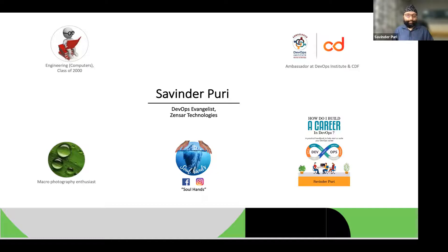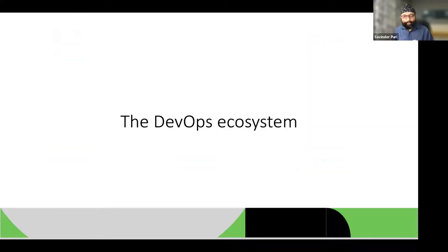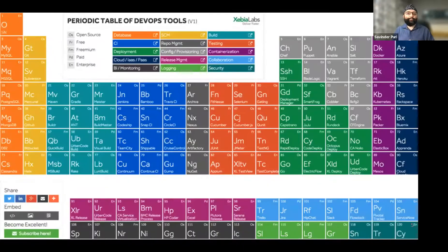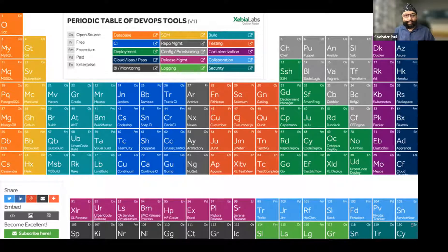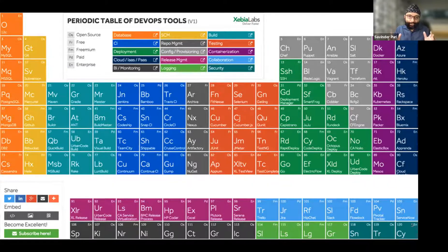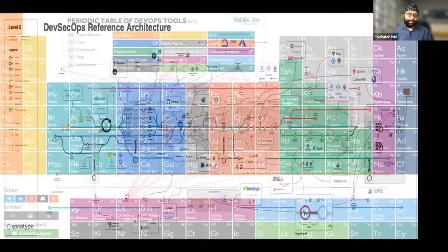Let's talk about the DevOps ecosystem. This is the famous periodic table by Xebia Labs, now part of Digital.ai. If you haven't seen this, I'd highly recommend searching 'periodic table Xebia Labs.' It gives you a bird's eye view of the tools out there in the DevOps world — and if it's large enough to encompass a periodic table, you can imagine how much fun it will be to master.